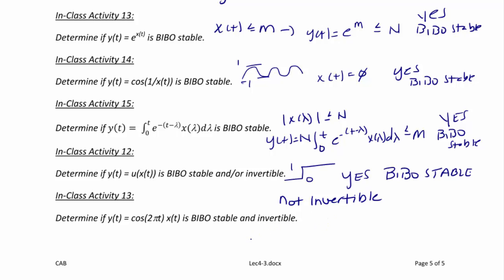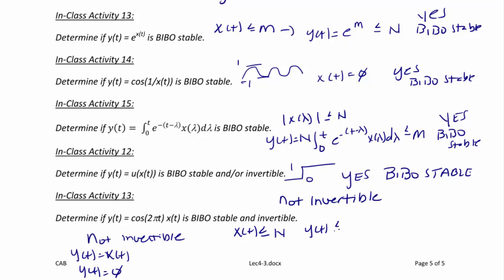For y(t) = cos(2πt)·x(t): this is not invertible because there are multiple inputs that give the same output — for instance, if y(t) = 0, it could be because x(t) = 0 or because cos(2πt) = 0. However, if |x(t)| ≤ n, then |y(t)| ≤ n·|cos(2πt)| which is bounded since cosine is between −1 and 1. So this system is BIBO stable.